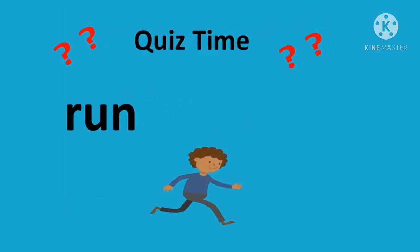Let's discuss some irregular verbs. The first one is 'run' — what will be the past irregular verb of run? The answer is 'ran.' The spelling is completely changed: r-a-n. So 'run' is present and 'ran' is past.